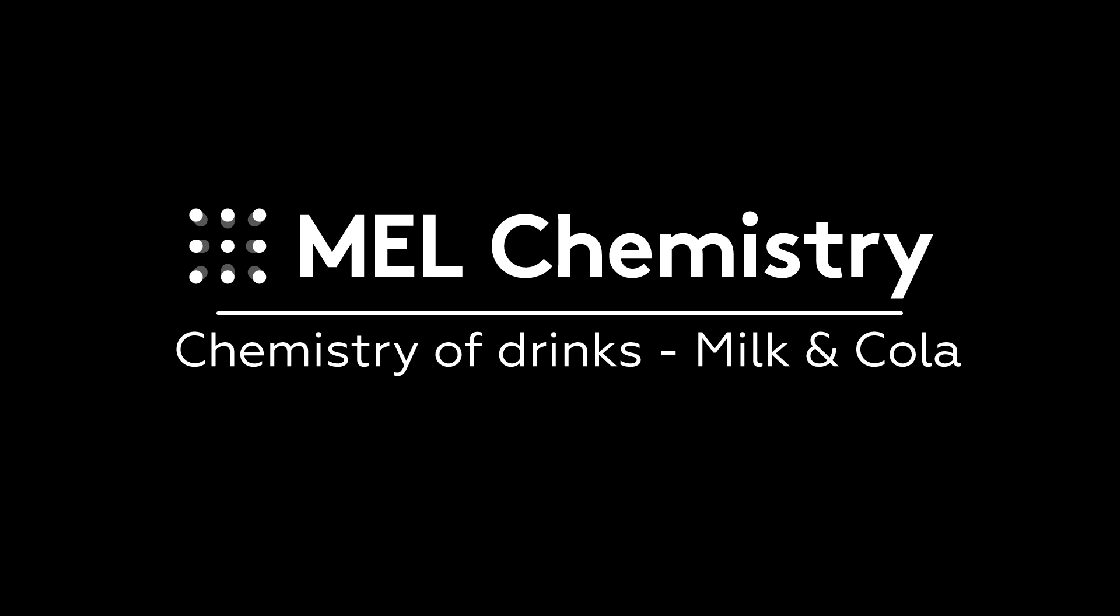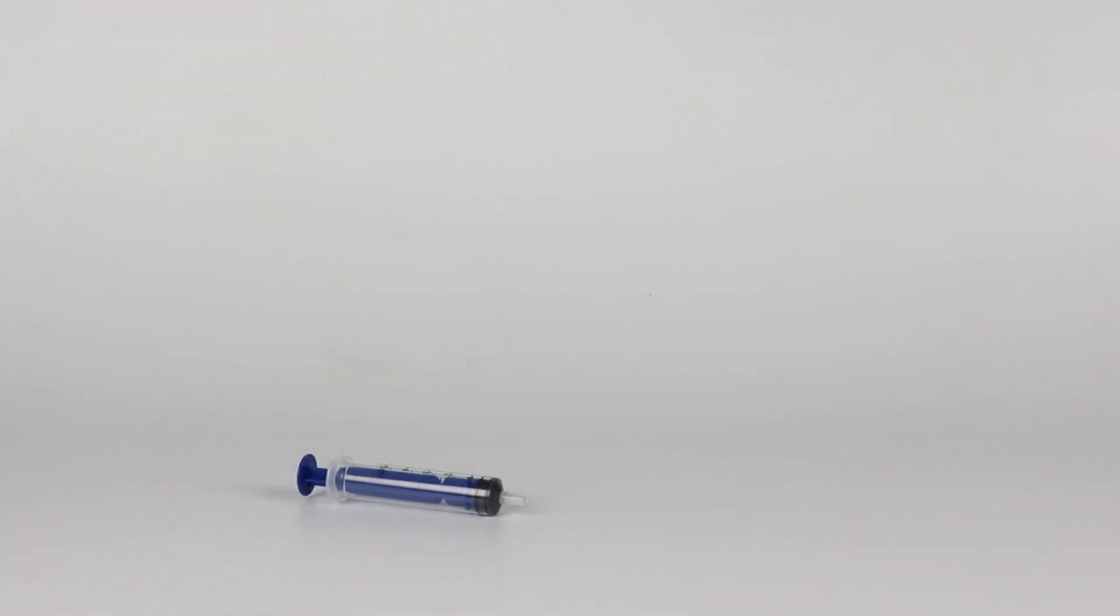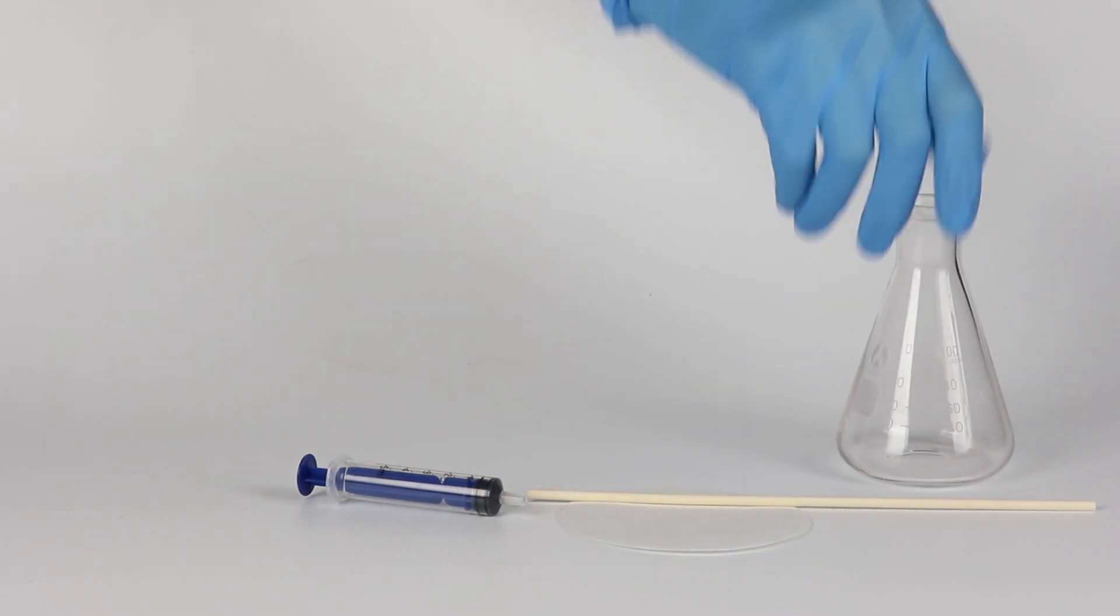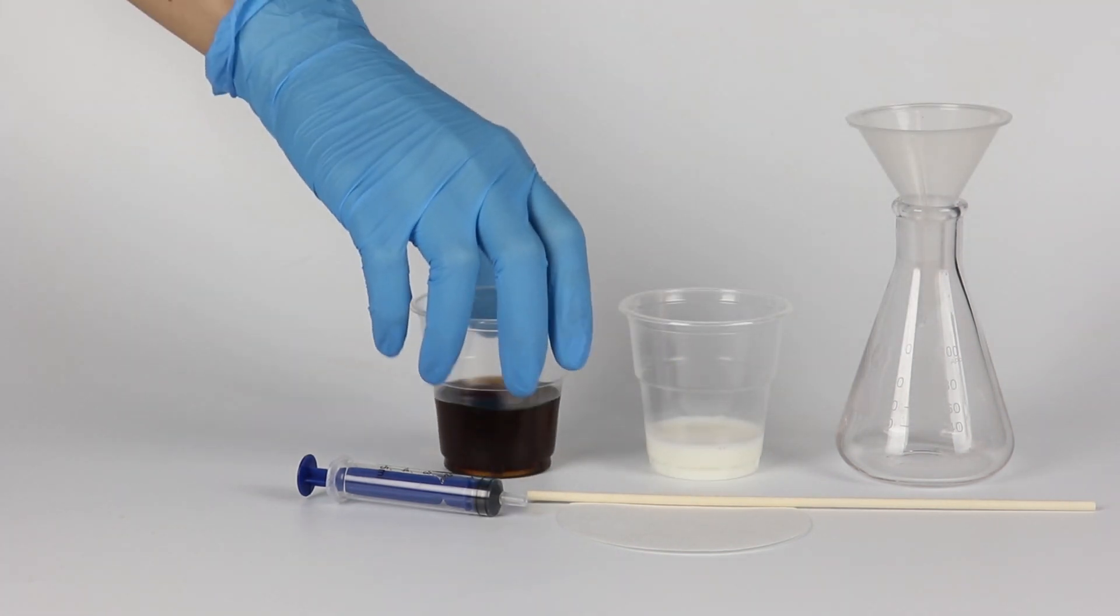For the milk and cola experiment you will need a syringe without a needle, a filter paper, and a wooden stick. Take the flask and the funnel from the starter kit. Also prepare some milk and cola in advance.